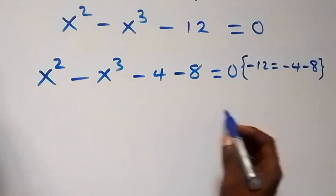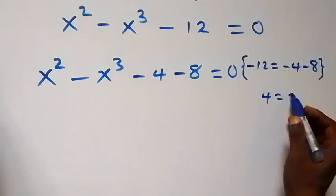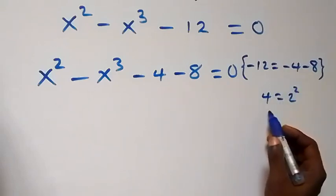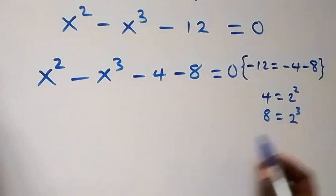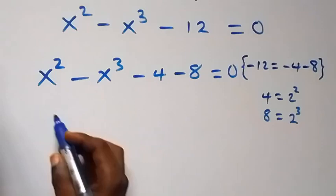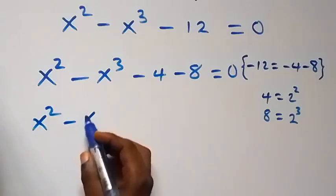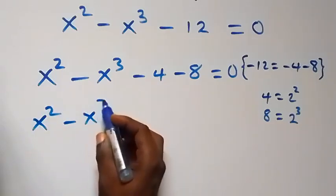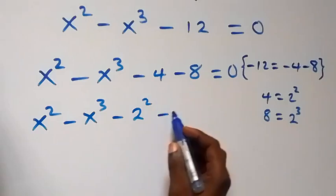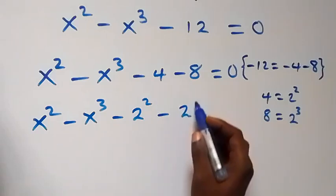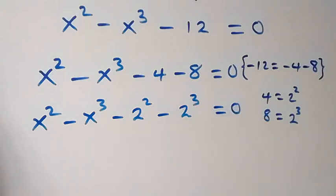Then also here we can write 4 as 2 squared, or we can write 8 as 2 cubed. So we have x squared minus x cubed minus 2 squared minus 2 cubed, now equals to zero.